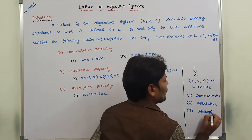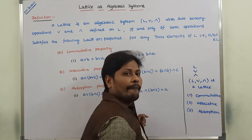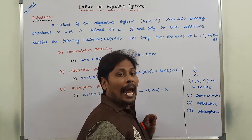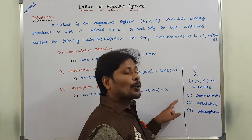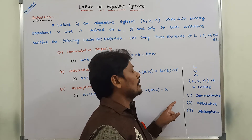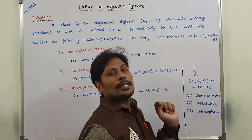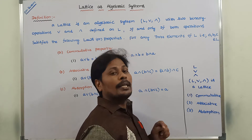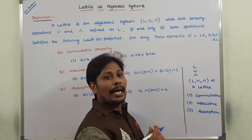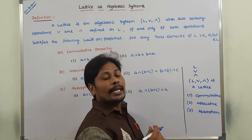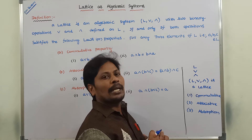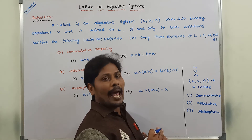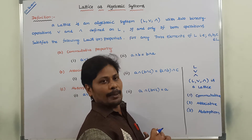Third property is absorption property. So whenever any lattice satisfies these three properties with respect to the join operation and meet operation, we can say that that lattice is said to be an algebraic system. This is the simple definition of lattices as an algebraic system.